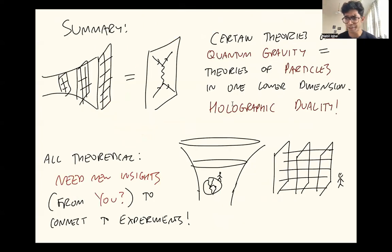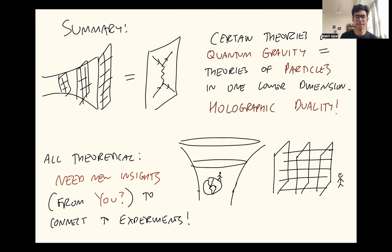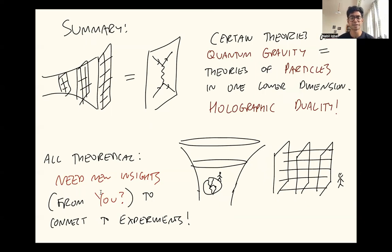Let me just summarize everything. It turns out that certain theories of quantum gravity are exactly equivalent to theories of particles living in one lower dimension, and this idea is called holographic duality. At this moment, this field is completely theoretical. It seems that we might need some new insights coming maybe from the next generation of physicists to help us learn how to connect these theoretical ideas to experiments. Thank you.